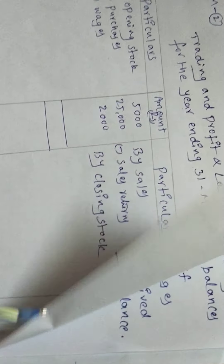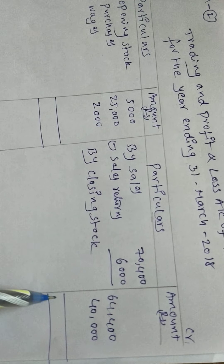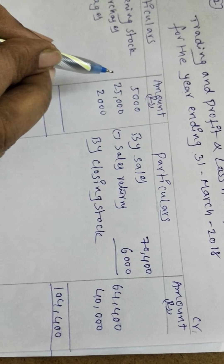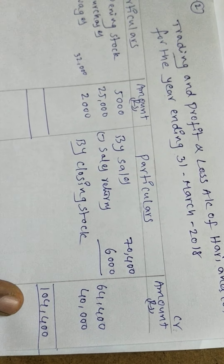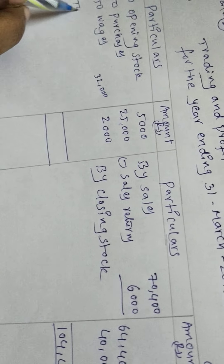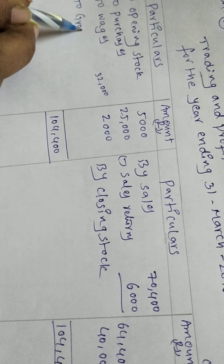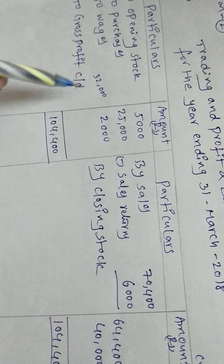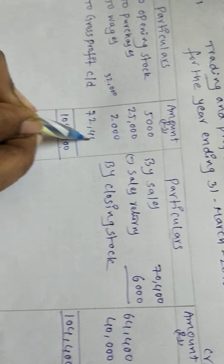Now we add both sides. Credit side has 1,04,400 and debit side has 32,000. Credit side has more balance — incomes are more than expenditure. The same total of 1,04,400 is recorded on both sides. Gross profit carried down is 1,04,400 minus 32,000 equals 72,400.